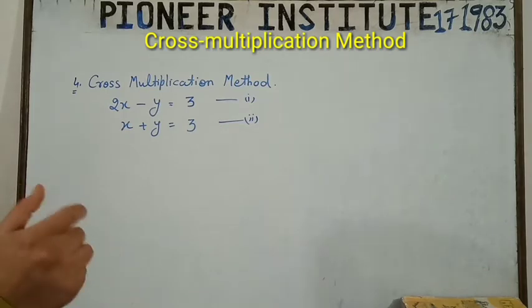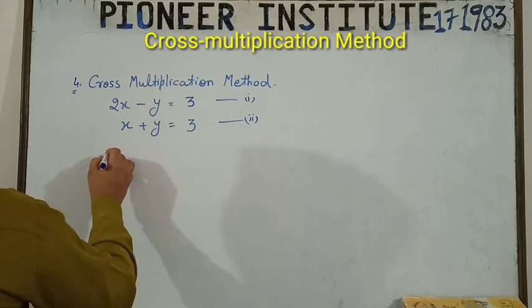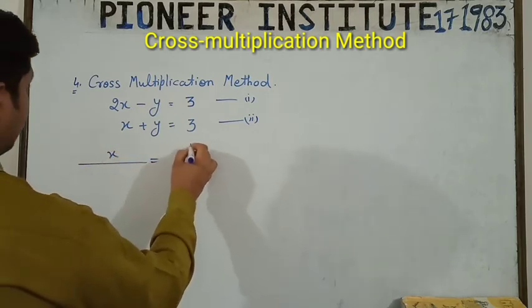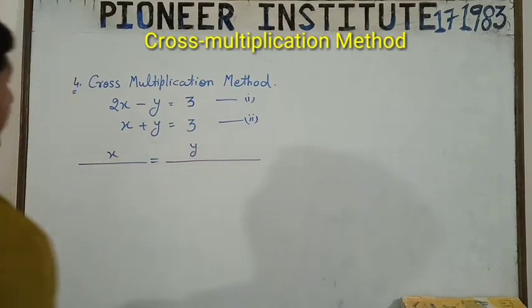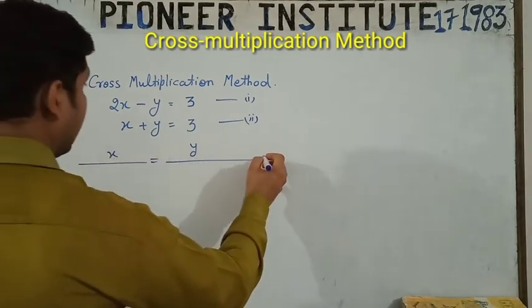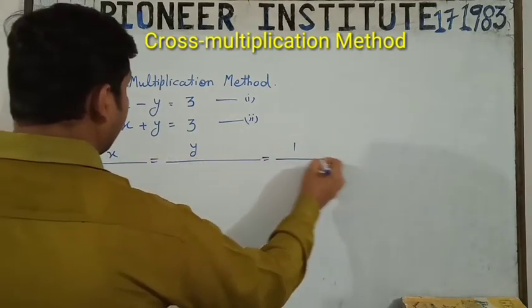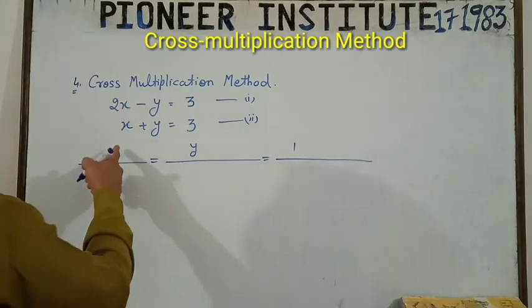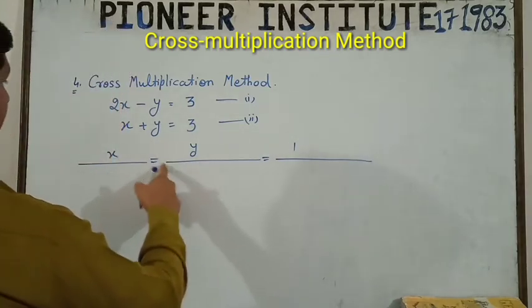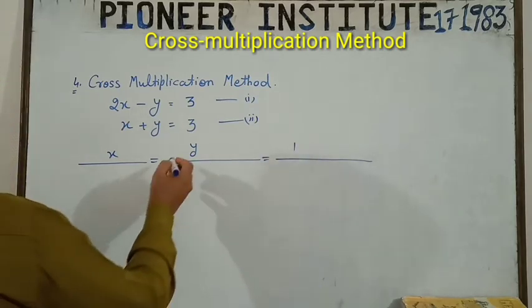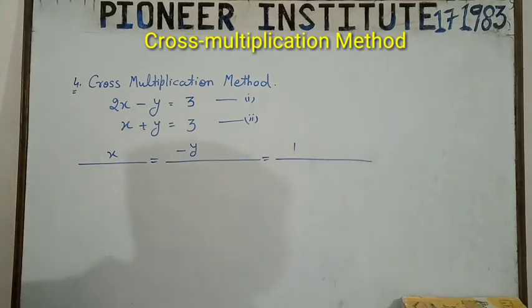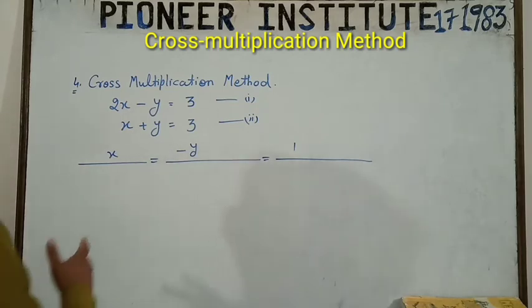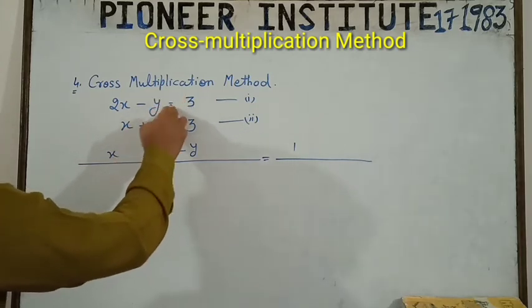So we have a short method, cross multiplication method. It is too short in comparison of other methods. We will provide you the simple way of this method, but in NCERT book you have some defined sign. This is the first method: x upon equal to y upon equal to one upon. So you have minus sign, but in NCERT book you have no negative sign.